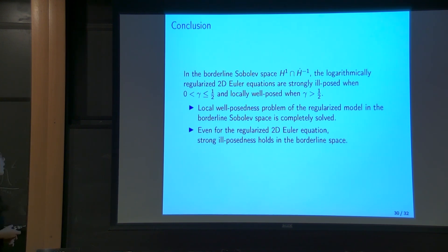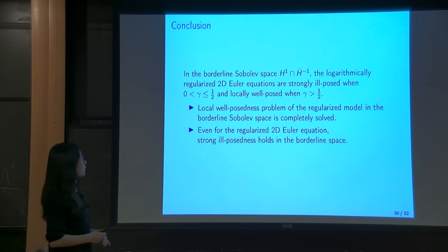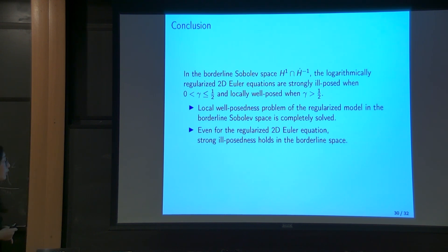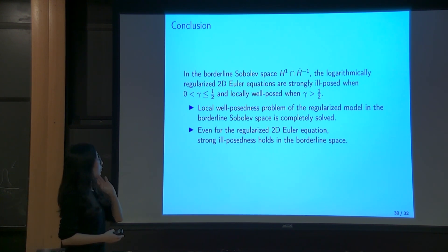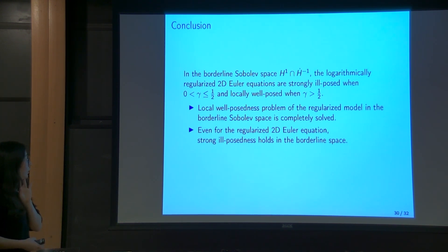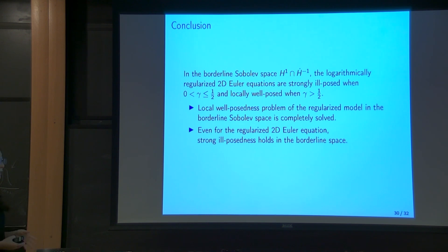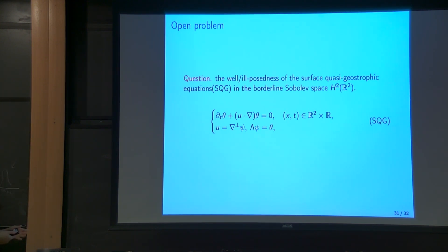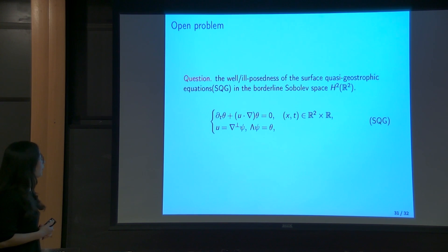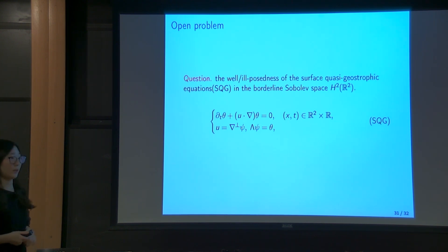Let me summarize. In the borderline Sobolev space, the regularized model is strongly ill-posed when gamma is less than or equal to 1/2, and it is well-posed when gamma is greater than 1/2. In other words, the local well-posedness problem of this regularized model is completely solved in the borderline Sobolev space, and it also tells us that even for the regularized 2D Euler equation we have strong ill-posedness in the same borderline Sobolev space. For the remaining time let me introduce one open problem in this direction, which is the well-posedness or ill-posedness of the surface quasi-geostrophic (SQG) equation in the borderline Sobolev space.